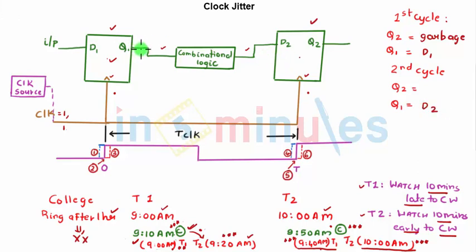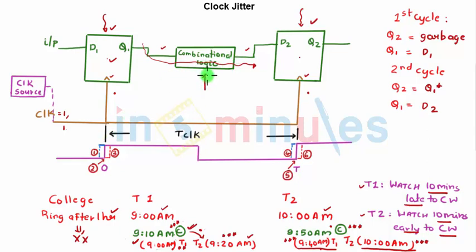The second flip-flop takes the input Q1 which has passed through the combinational block — something like an adder or multiplier — and we call this Q1 computed. With every clock cycle, the first flip-flop takes a new input while the second flip-flop produces the previous output computed by the combinational block. The clock here, going from time zero to time T, is my T-clock — the time given for sequential and combinational blocks to compute and get the correct output.